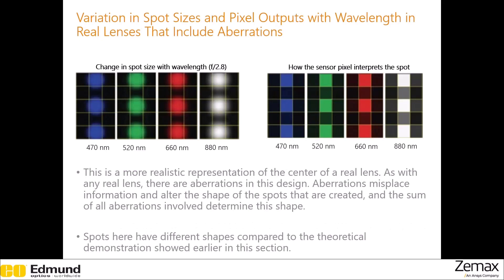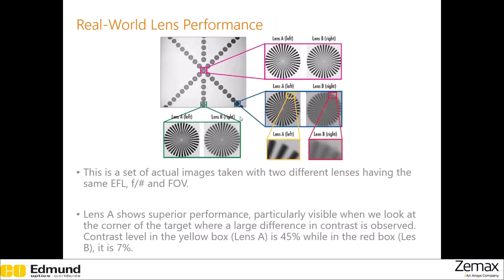Now let's consider a real lens. As with any practical imaging system, aberrations cause loss or misplacement of information, and it can change the shape of the spots that are being created. Depending on the relative contributions from different kinds of aberrations, these shapes can be very different from theoretical predictions. These are actual images taken with two different lenses that have the same focal length, f-number, and field of view, with the same target used in both cases. If you look at the corner of the target, you can realize that lens A outperforms lens B easily. While lens A produces 45% contrast, lens B only produces 7%.